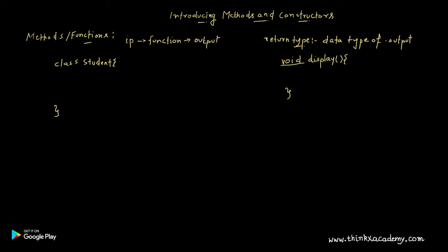The return type of the function is void since the display function is not going to return anything. But in some cases there will be functions that return values like an integer or a character. In the display function, inside the circular braces you can optionally write input parameters — like int x, y — and the curly braces contain the block of statements of the display function.